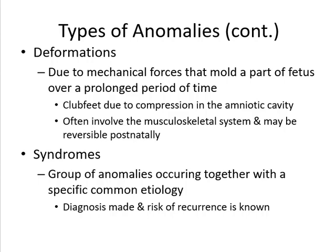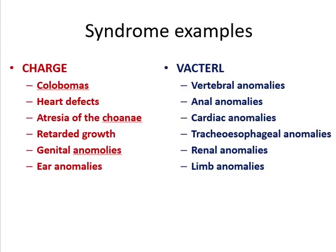Syndromes are a group of anomalies occurring together with a specific common etiology, allowing diagnosis and known risk of recurrence. An example is CHARGE syndrome, which refers to colobomas, heart defect, atresia of the choanae, retarded growth, genital anomalies, and ear anomalies. Another example is VACTERL syndrome, which includes vertebral, anal, cardiac, tracheoesophageal, renal, and limb anomalies.